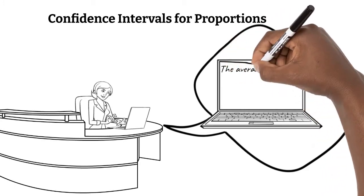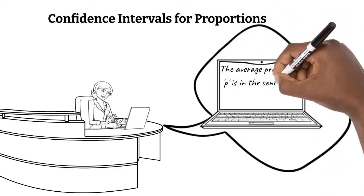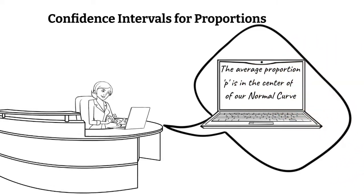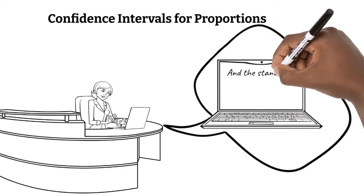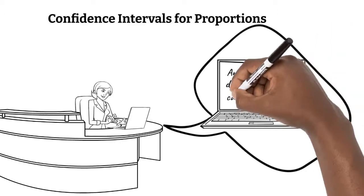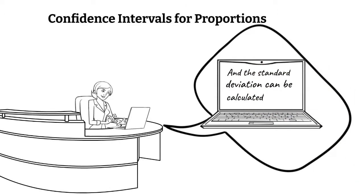For the results of these surveys, the average proportions of all the samples, p, is in the center of our normal curve, and the standard deviation of our proportions can be calculated using a formula that we will be revisiting in this lesson.